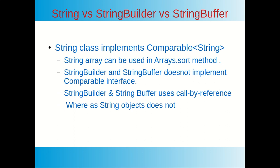An important difference is how objects behave when passed as parameters to a method. StringBuilder and StringBuffer use call-by-reference — the caller and the called function operate on the same memory location. String objects, however, do not use call-by-reference — a new object is created each time.